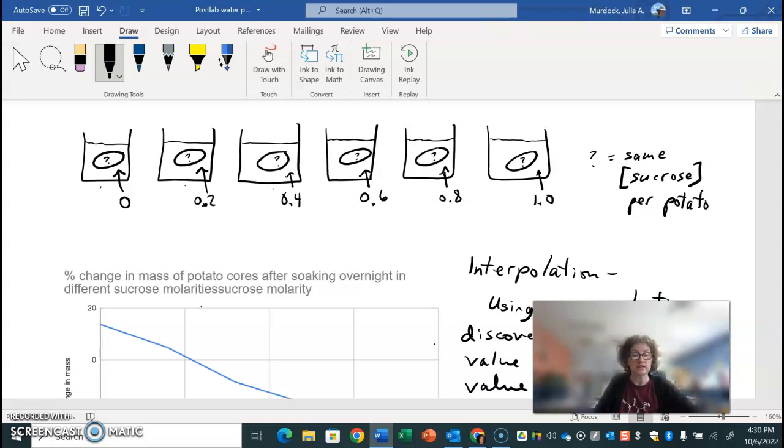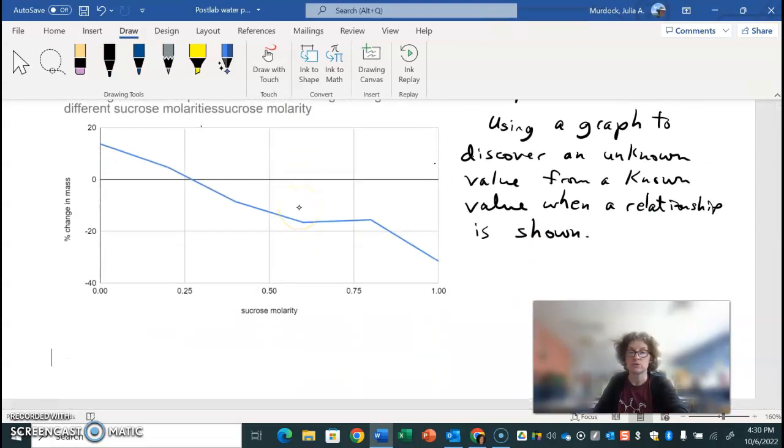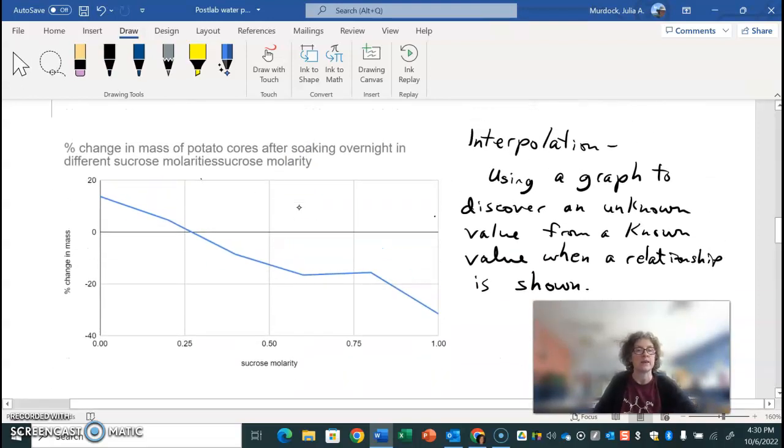So when you guys weighed them and then let them soak overnight and then weighed them again, there was a change in percent mass. And we graphed that. And the graph looks like this. It was percent change in mass of the potato cores after soaking overnight in different sucrose molarities.